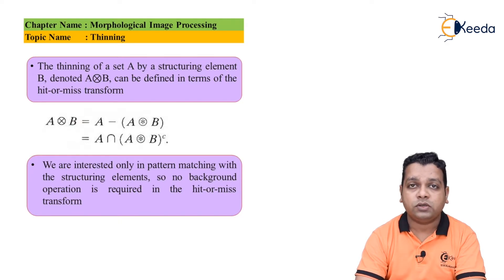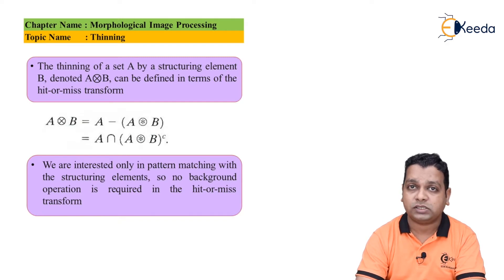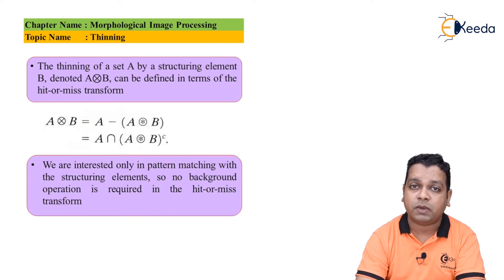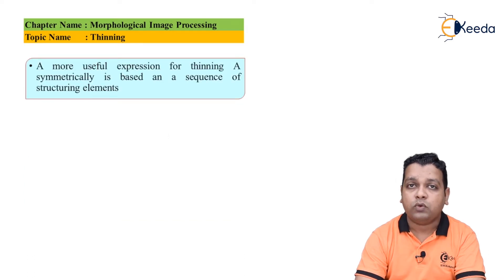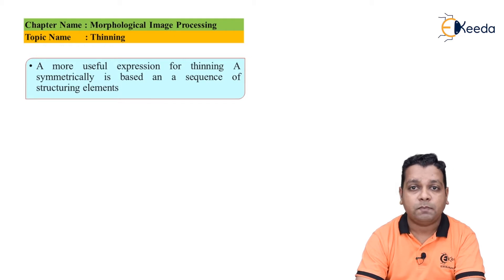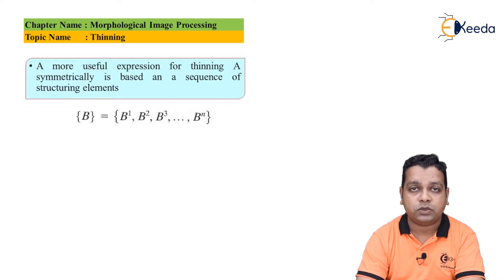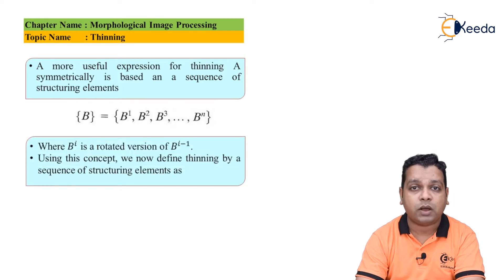For this particular topic, we are interested only in pattern matching with the help of the structuring element. The hit-or-miss transformation is for template matching, and all these morphological operations apply to binary images, so there is no concern of the background operation required in the hit-or-miss transformation. A more useful expression for thinning capital A symmetrically is based on a sequence of structuring elements: a set B containing B to the power 1, B to the power 2, B to the power 3, up to B to the power n.